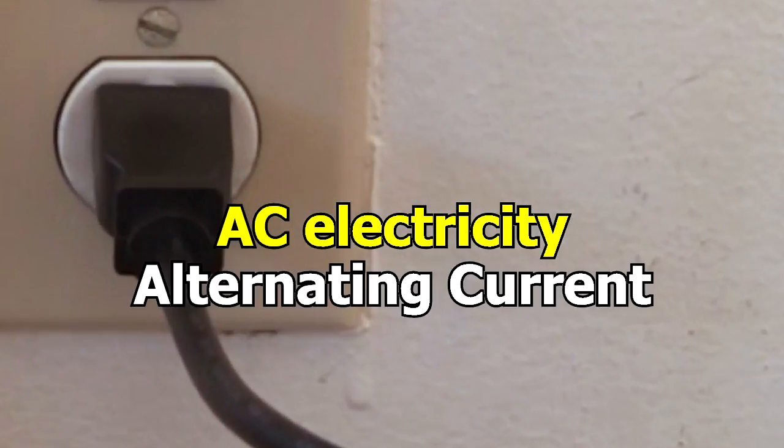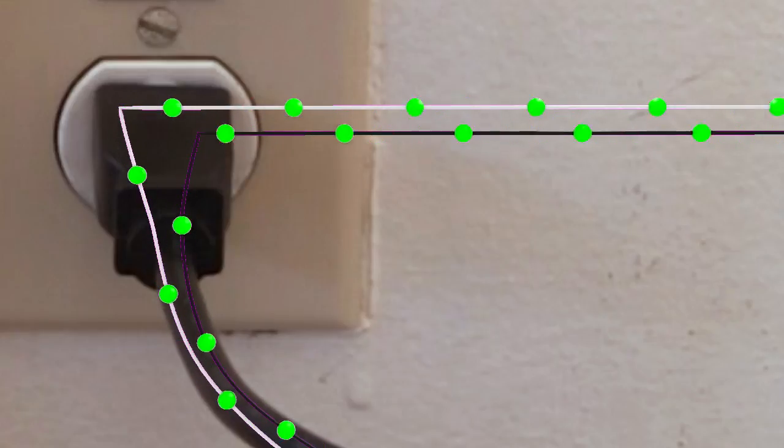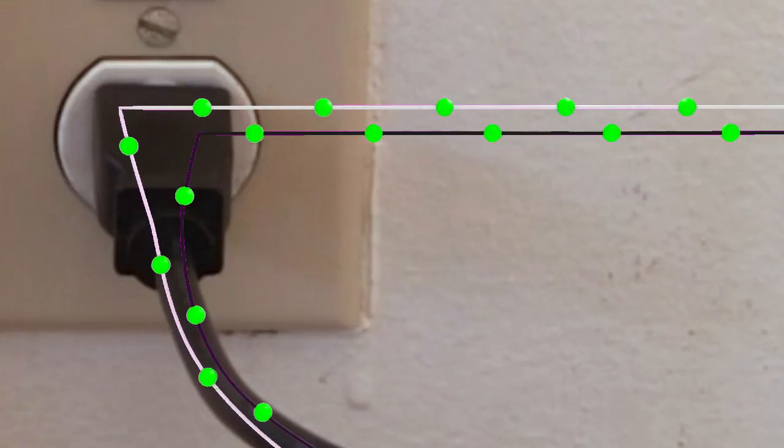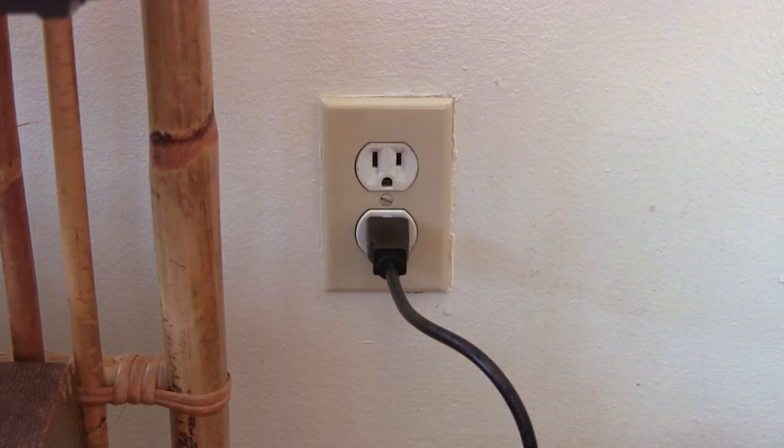AC electricity stands for alternating current. In that case, the electrons move in one direction, then reverse direction, and then reverse again. They alternate in directions. Anything that you plug into a wall socket in your house uses AC electricity.